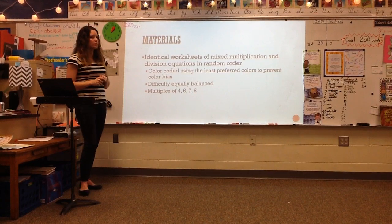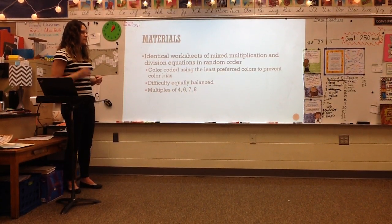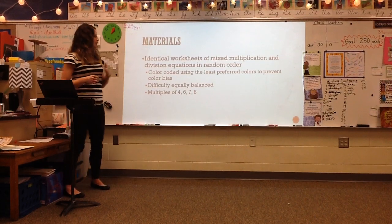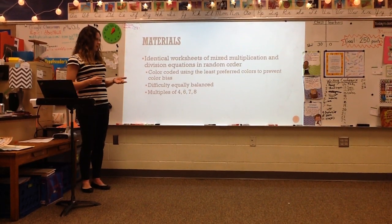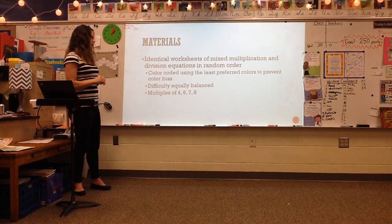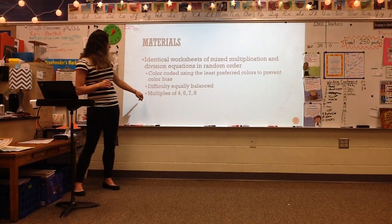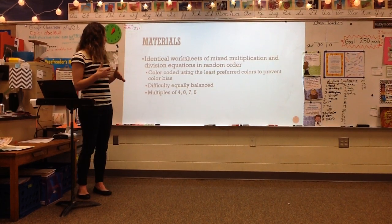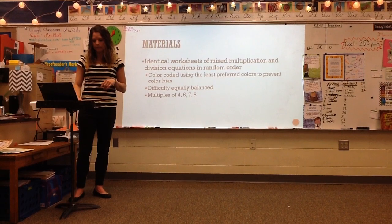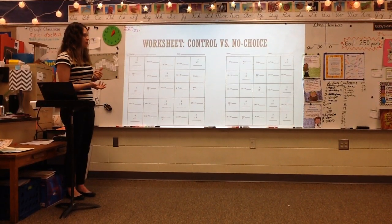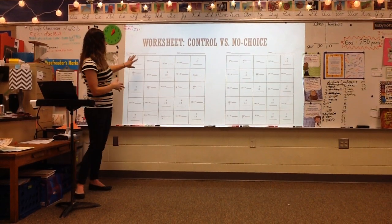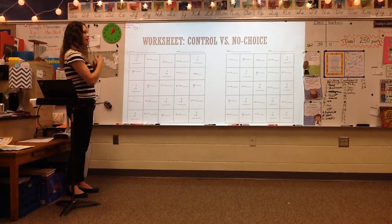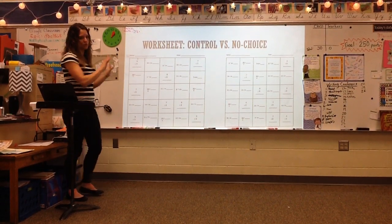The materials used for my study: I'm going to use identical worksheets of mixed multiplication and division equations presented in random order. Each worksheet will be color-coded using the least preferred colors to prevent color bias. The difficulty will be equally balanced, and the equations will use multiples of 4, 6, 7, and 8, because those have been identified as the most challenging multiplication and division multiples within the classroom. This is just an example of two randomized worksheets — the control worksheet and the no-choice worksheet. They would be color-coded to identify what condition they're in, with the same exact problems just mixed up.